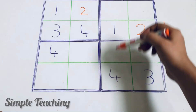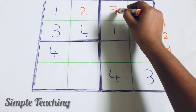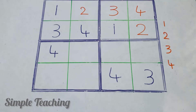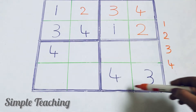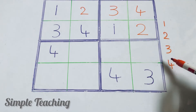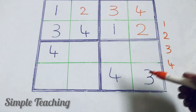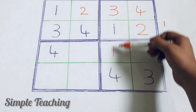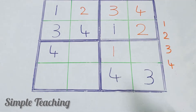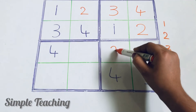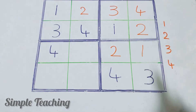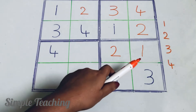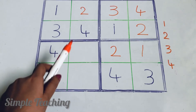We have to check the columns. In this column there is no 3, so we write the 3 here. And in this column there is no 4, so we write the 4 here. Next, check this row — what are missing? We have 4 and 3 already, so 1 and 2 are missing. If we write the 1 here, check this column — the 1 is repeating. So we write 2 here and 1 there. Now it is easy to find the remaining number.